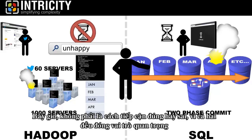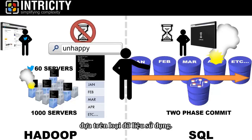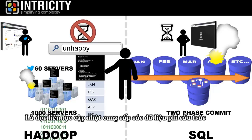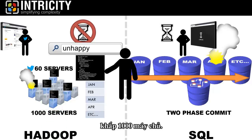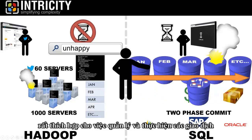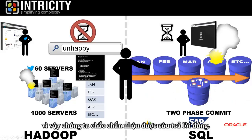Now neither approach is right or wrong, as both have an important role to play based on the type of data being used. The eventual consistency methodology in Hadoop is a far more realistic method of reading continuously updating feeds of unstructured data across thousands of servers. While the two-phase commit methodology for SQL databases is well-suited for managing and rolling up transactions, so we're sure we're getting the right answer.